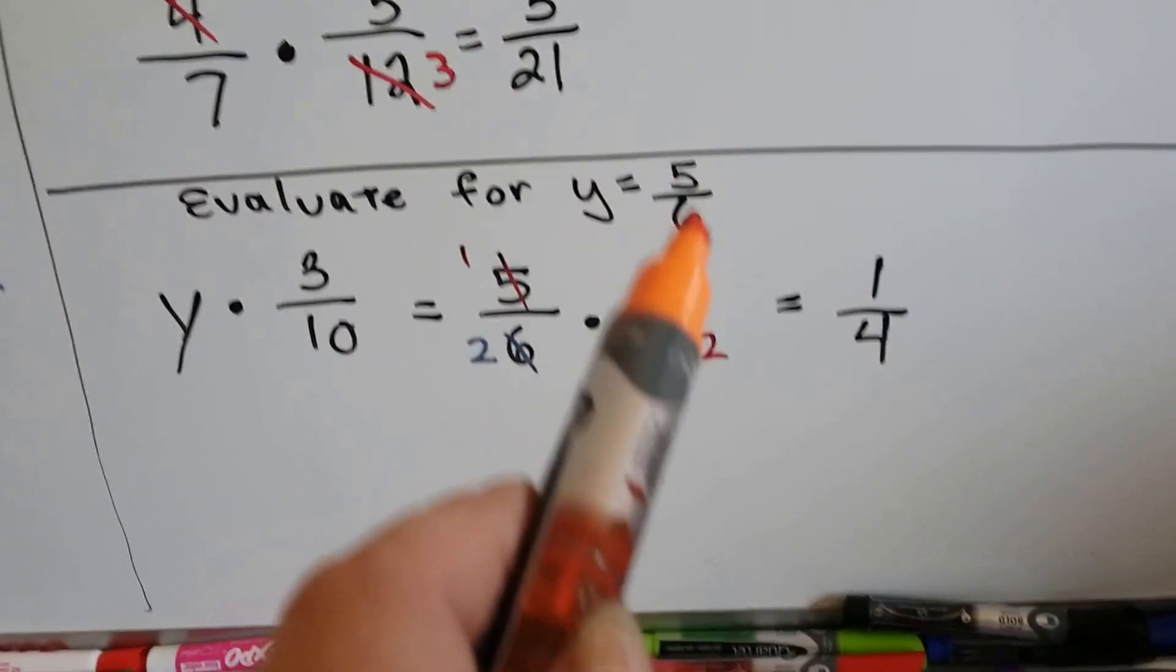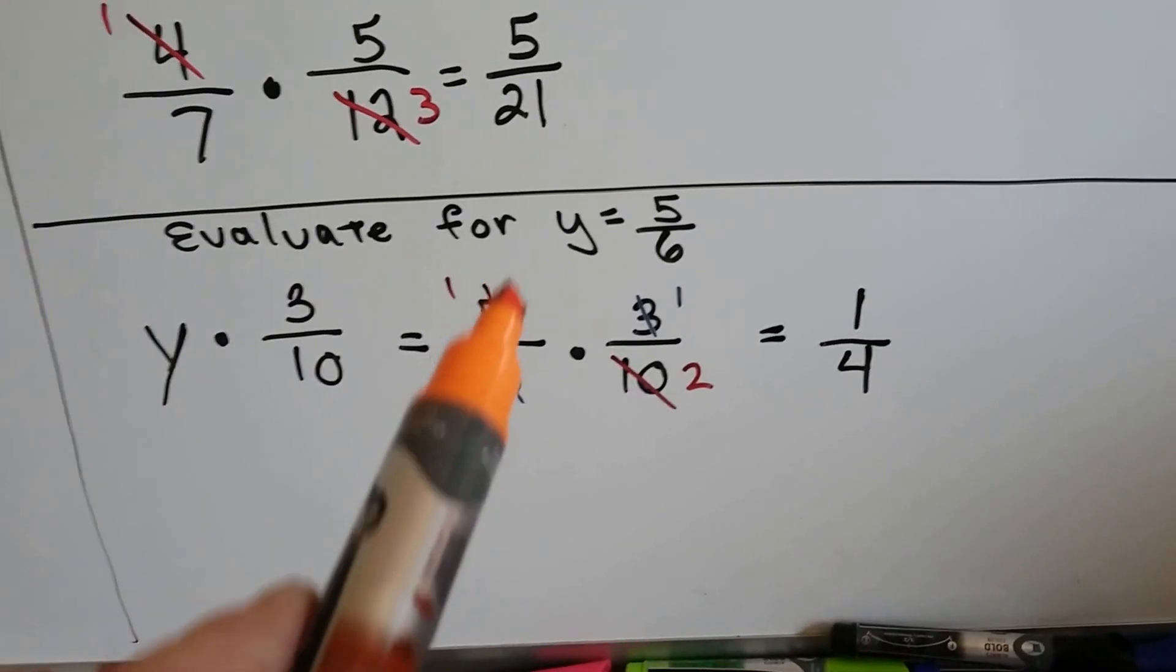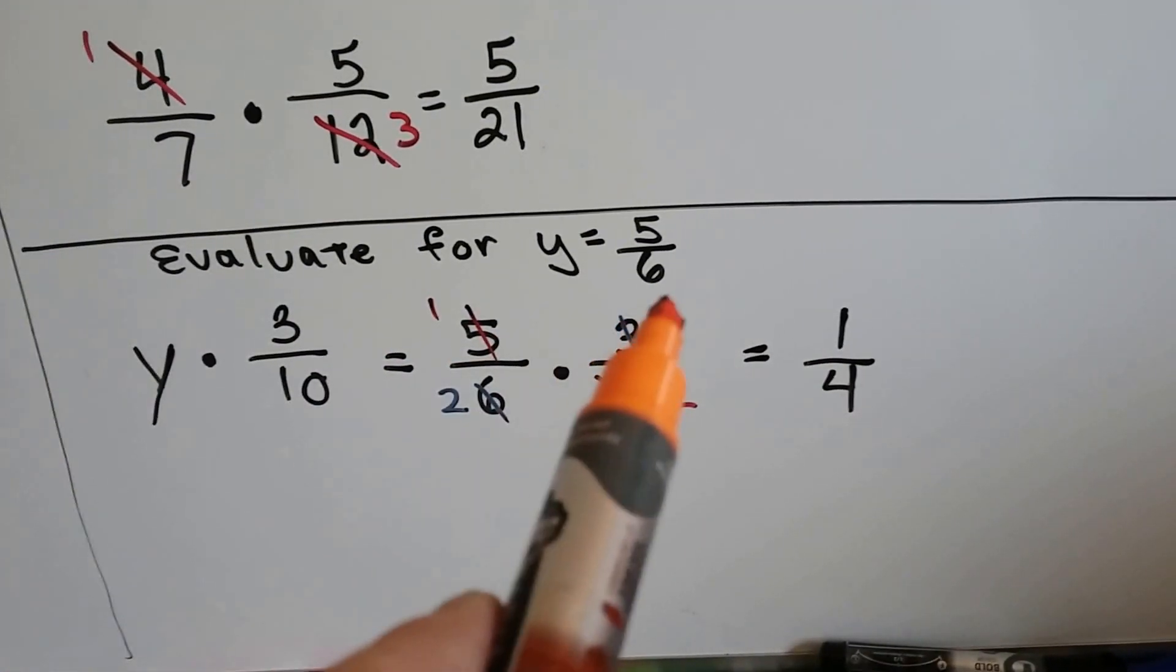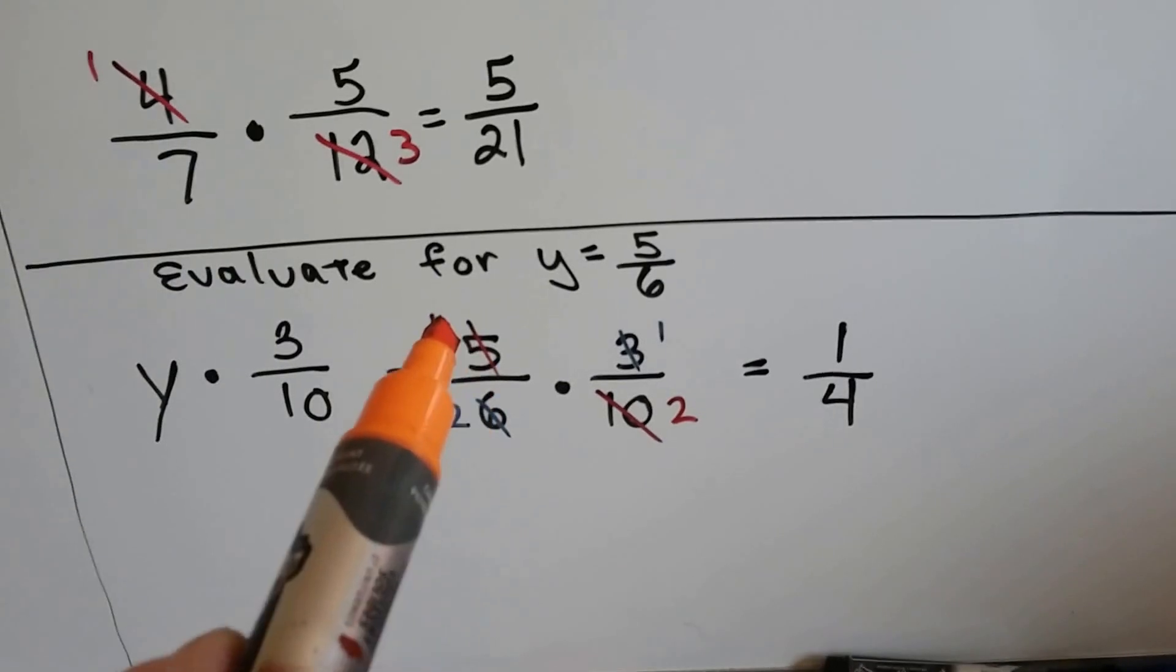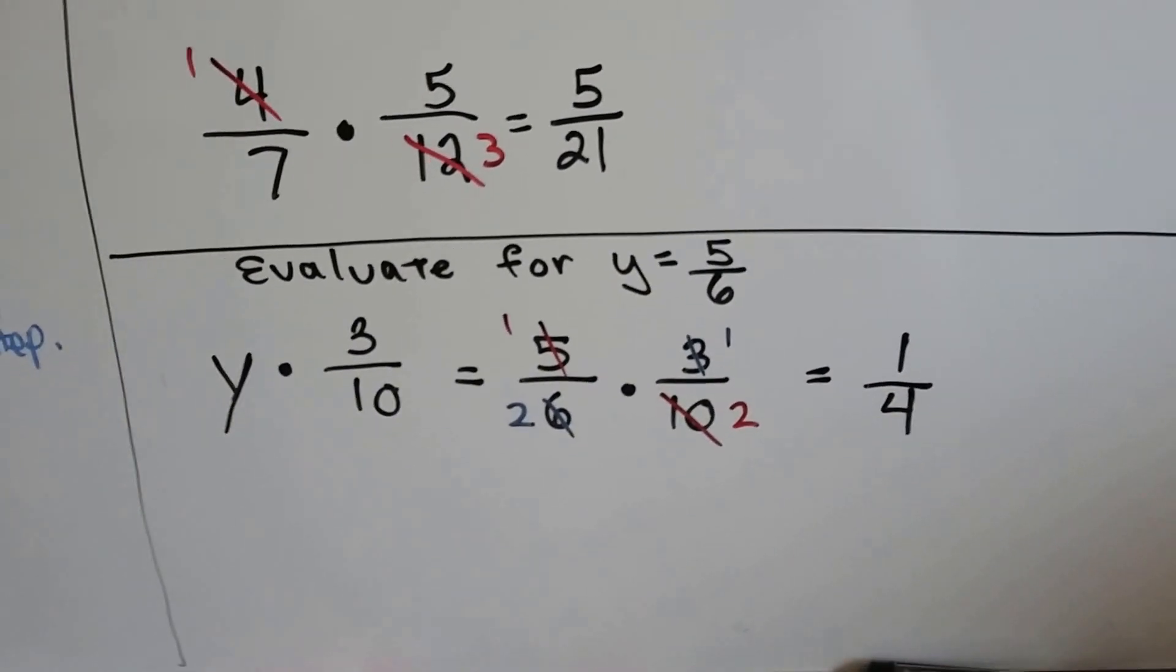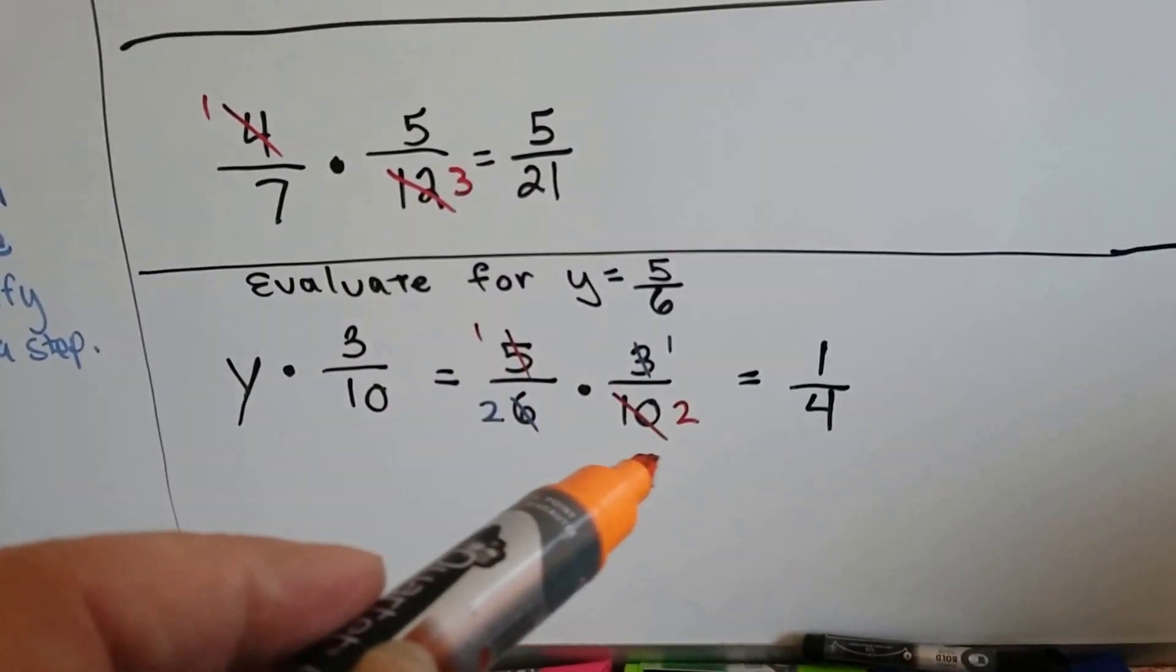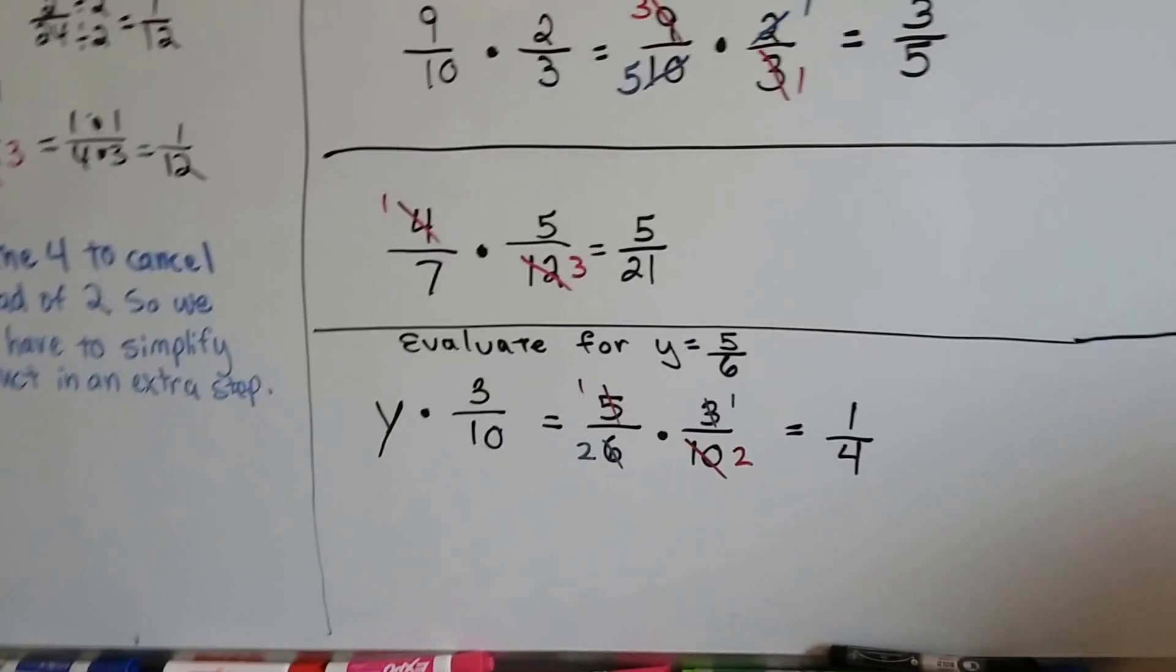If it says evaluate for y and y equals five-sixths, we just plug the y in to the problem, to the equation. So now we have five-sixths times three-tenths. We can cancel the five out with the ten. We get a one and a two. And the three and the six can cancel out as a one and a two, because there's two threes in here, and there's one three here. Then we end up with one times one over two times two. We get one-fourth. Very quick. Otherwise, we would have had fifteen-sixtieths. We would have had to cancel out or simplify and simplify and divide to figure out that it was one-fourth.